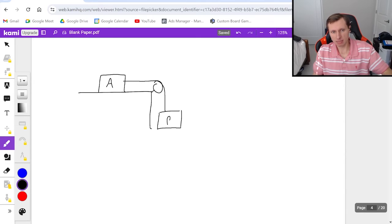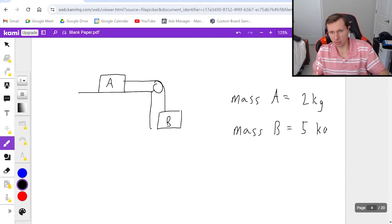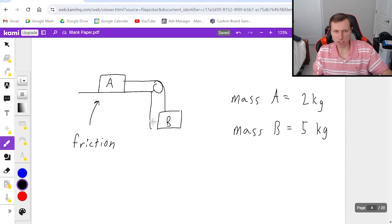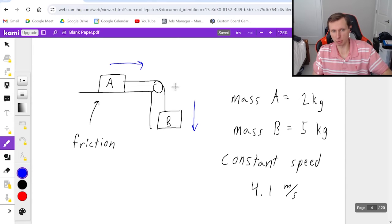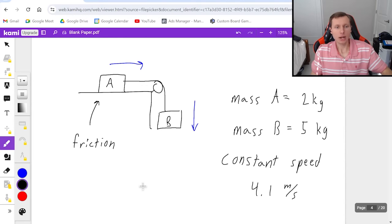I have two masses here connected to the pulley. I'll call them mass A and mass B. Mass A is going to equal 2 kilograms, and mass B is going to equal 5 kilograms. I will say there is friction acting on block A because it's touching the surface. But there's no friction on block B because it's not touching any surfaces. It's just hanging from the rope. I will tell you that this pulley system is moving with constant speed, and we'll say that constant speed is 4.1 meters per second. And obviously block B is moving down and block A is moving to the right.